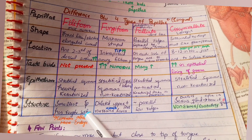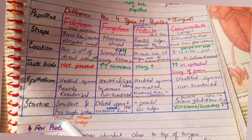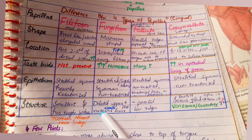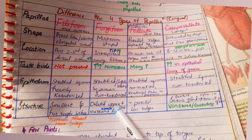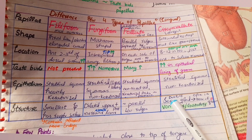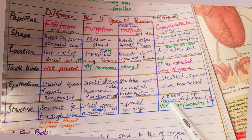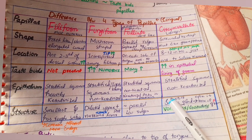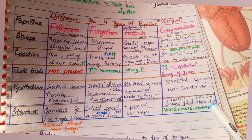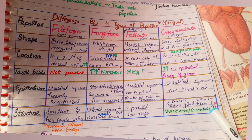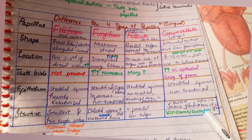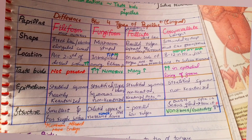Filiform papillae are the smallest but most numerous. They have rough surfaces and contain afferent nerve endings. Fungiform papillae have a dilated upper part and a narrowed lower part. Foliate papillae contain parallel ridges. An important point about circumvallate papillae is that the ducts of the serous gland, called von Ebner's gland or the gustatory gland, open at the base of the grooves surrounding the circumvallate papillae.